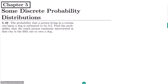Hello guys, this is question 5.49. The statement of this question is: the probability that a person living in a certain city owns a dog is estimated to be 0.3. Find the probability that the 10th person randomly interviewed in that city is the 5th one to own a dog.